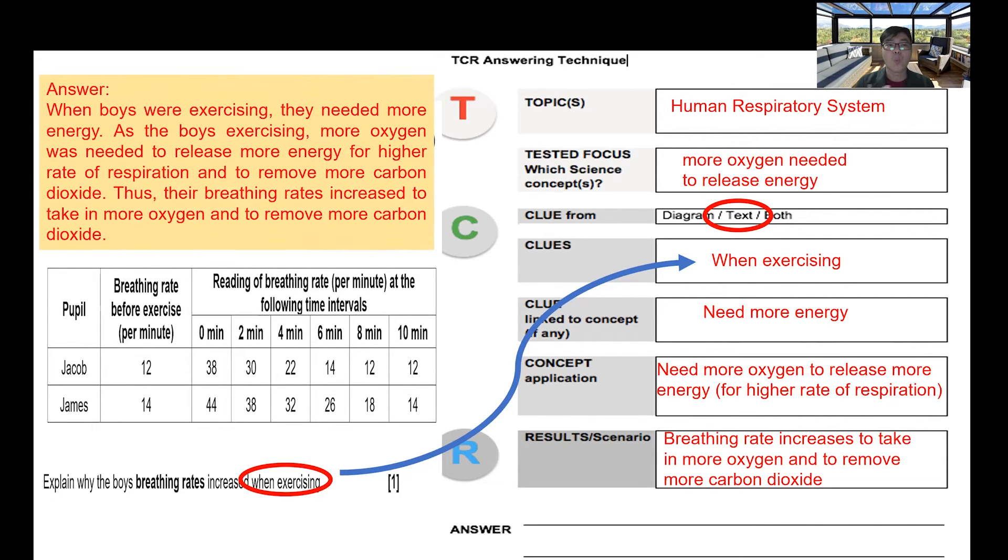Let's put what we have used - we have used the TCR answering technique into phrasing the question. So the answer would be: when boys were exercising, they needed more energy. As the boy is exercising, more oxygen was needed to release more energy for higher rate of respiration and to remove more oxygen. Now the keyword 'more' is very important because we are comparing. Thus, their breathing rate increased to take in more oxygen to remove more carbon dioxide.